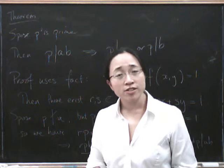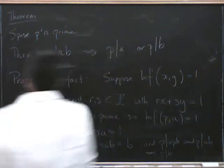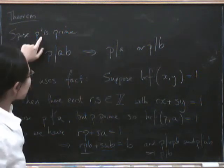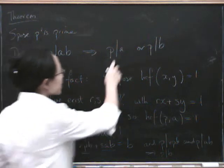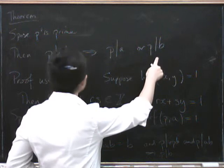The end of that last video was a bit rushed, so I'll just say that again. We want to show that, start with a prime number p. If p divides ab, then either p divides a or p divides b.